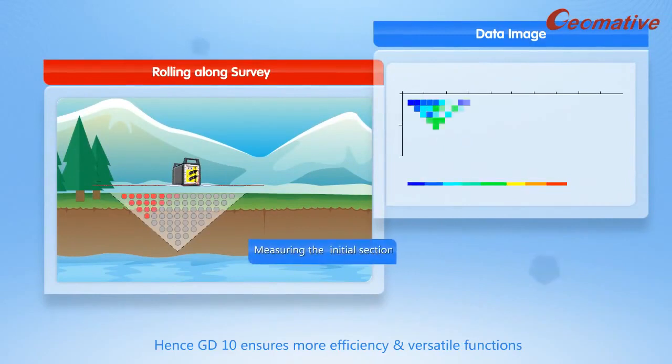Using our ERI components, you can make high-power IP rectangular grid imaging with single layout. You can finish imaging for an entire cross-section. Hence, GD-10 ensures more efficiency and versatile functions.